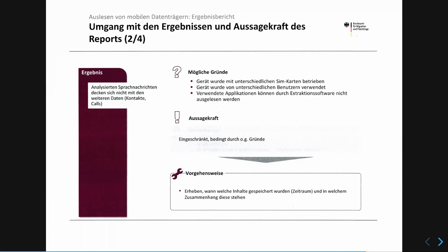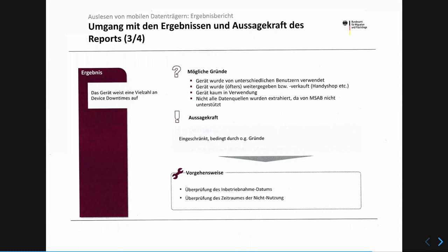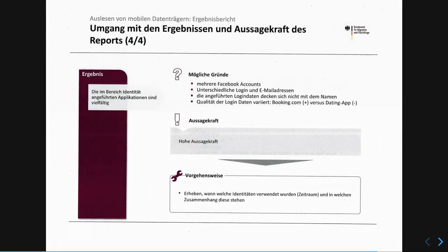In results, they look at applications related to identity — many different accounts — and assume that a large number of apps represents meaningful information. They say booking.com data is better than dating app data, though it's not clear why. MSAB is actually the only serious competitor to Cellebrite, and it can break into smartphones — though allegedly they don't do this because they're not allowed to. But the ministry of the interior has stated they're looking into expanding capabilities, wanting to access photos as well.